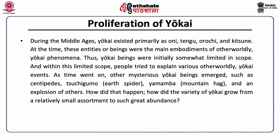Proliferation of Yokai: During the Middle Ages, Yokai existed primarily as Oni, Tengu, Orochi, and Kitsune. At the time these entities were the main embodiments of otherworldly Yokai phenomena. Thus Yokai beings were initially somewhat limited in scope, and within this limited scope, people tried to explain various otherworldly events. As time went on, other mysterious Yokai beings emerged, such as centipedes, Tsuchigumo (earth spider), Yamauba (mountain hag), and an explosion of others. How did the variety of Yokai grow from a relatively small assortment to such great abundance?